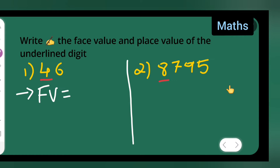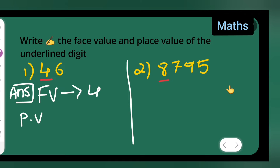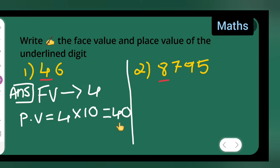Face value is equal to 4. And place value is equal to 4 multiplied by 10, which gives you 40. So the face value is 4 and the place value is 40, because 4 is in the tens place. Now let us do the second one.